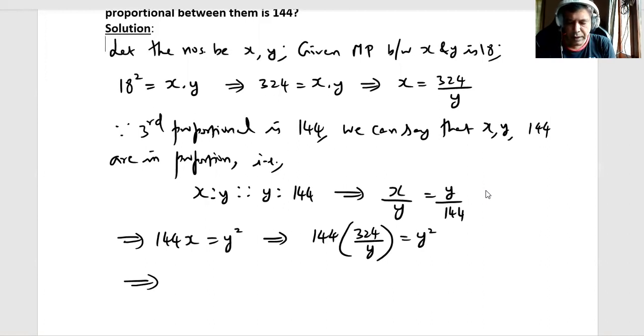144 into 324 we get 46,656 is y cube, which means y is cube root of 46,656.